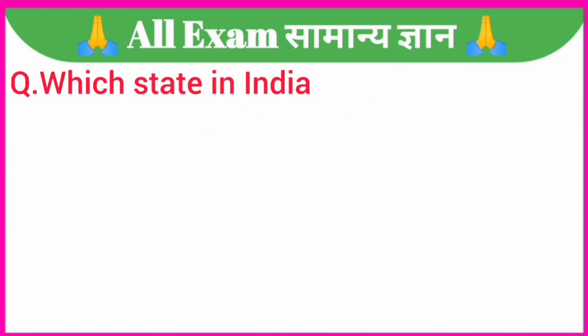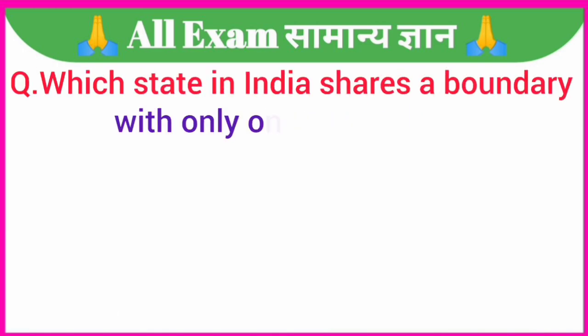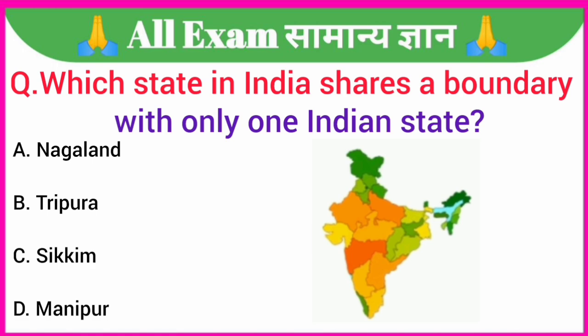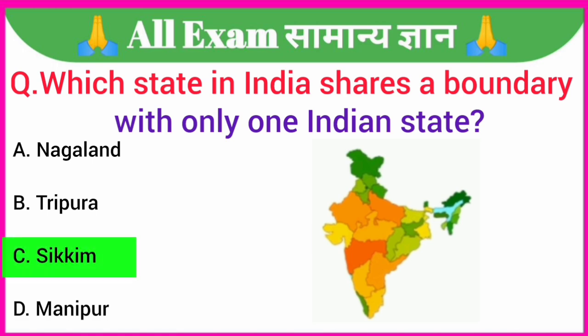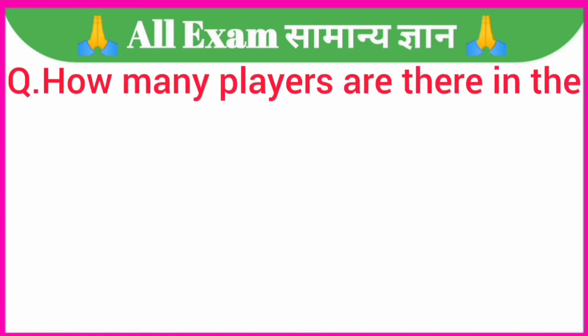Which state in India shares a boundary with only one Indian state? A. Nagaland, B. Tripura, C. Sikkim, D. Manipur. Your correct answer is option C. Sikkim.